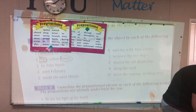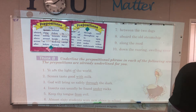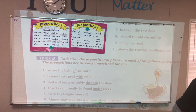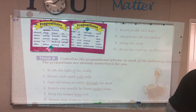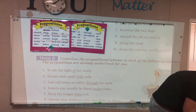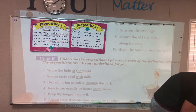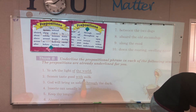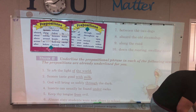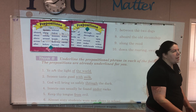How about letter B? Letter B tells us to underline the prepositional phrase in each of the following sentences. So they have: 'Ye are the light of the world.' It starts with the preposition 'of,' so the rest of the phrase should be 'the world.' It's not always at the end of the sentence, but you stop at the noun that is the best friend of that preposition.